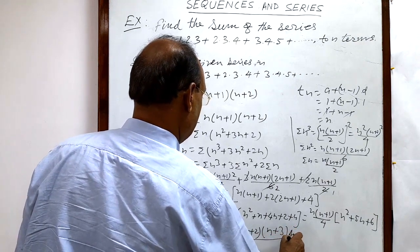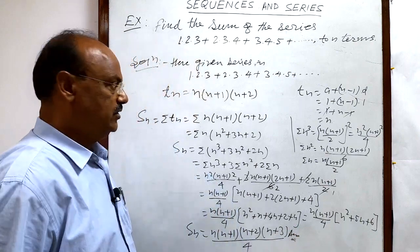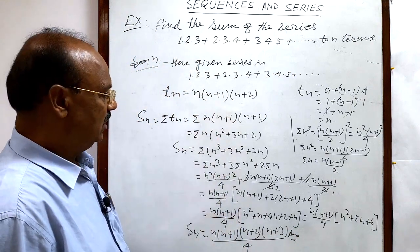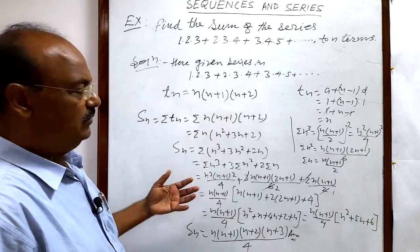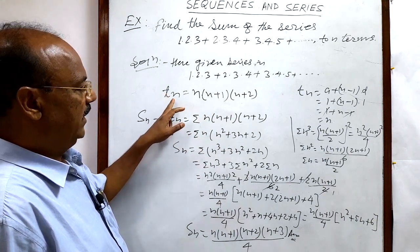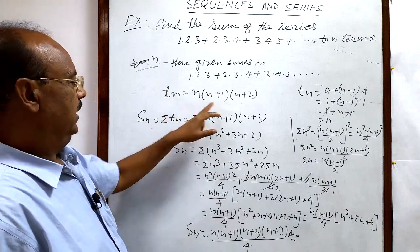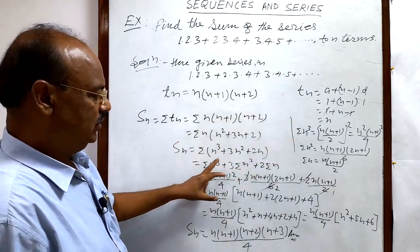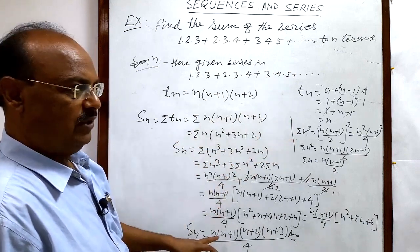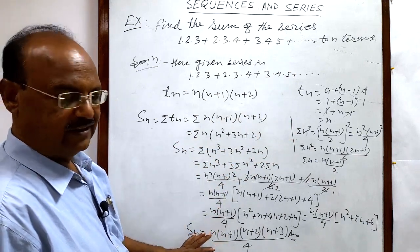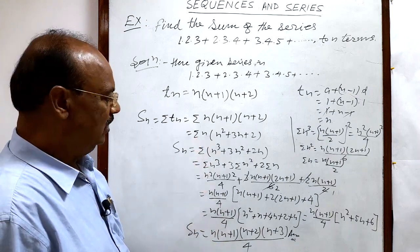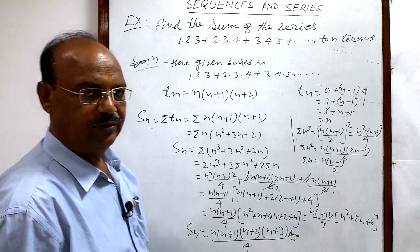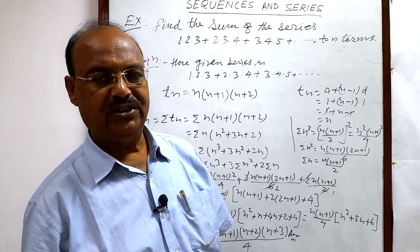Hope you have understood the process and the steps, and you can see how to find the solution. Simply, first write the nth term Tₙ, then apply sigma, substitute the required formulas, and simplify to get the result. This question is very interesting, simple, and important as well. Thank you very much for watching this video.